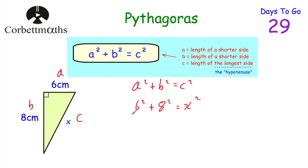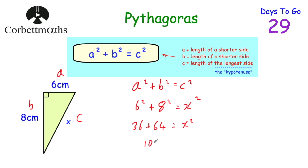Now we just need to work this out. 6 squared — 6 times 6 is 36 — so 36 plus, and then 8 squared — 8 times 8 is 64. So 64 is equal to X squared, the length of that side squared. Now 36 plus 64 equals 100. So 100 is equal to X squared.